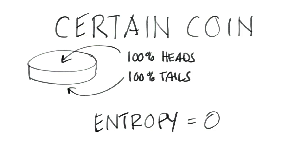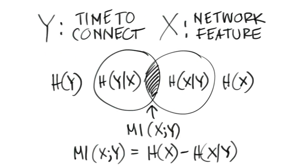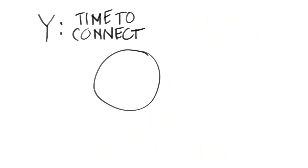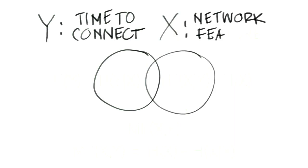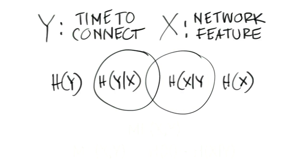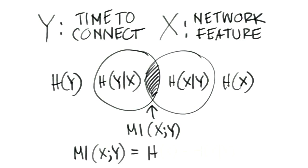Now let's go back and see how mutual information works with our SLE metrics. Graphically, what does this equation look like? This circle here represents the entropy of my SLE metric Y, and this circle is the entropy of my feature random variable X. Looking at our equation, the conditional entropy of random variable Y given the network feature X is this area here. If I subtract the two, what we're looking for is this middle segment — this represents the mutual information of these two random variables, and it gives you an indication of how well your network feature provides information about your SLE metric random variable Y.